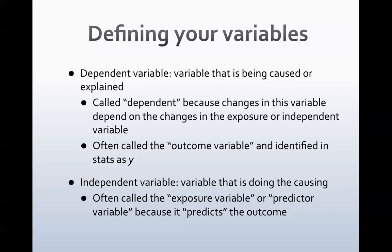Let's talk about variables. The dependent variable is the outcome variable—the variable being caused or explained. It's called dependent because changes in it depend on changes in the exposure or independent variable. It's also often referred to as the outcome variable or, in statistics, as Y. For our coffee and headaches example, the dependent variable is headache. The independent variable is coffee drinking—it does the causing, and it's often called the exposure variable or predictor variable because it predicts the outcome.